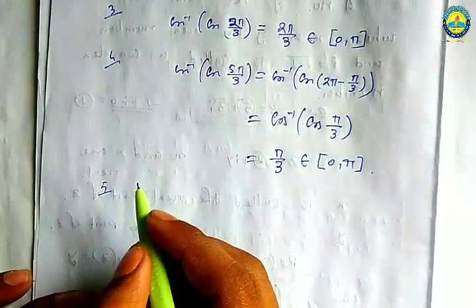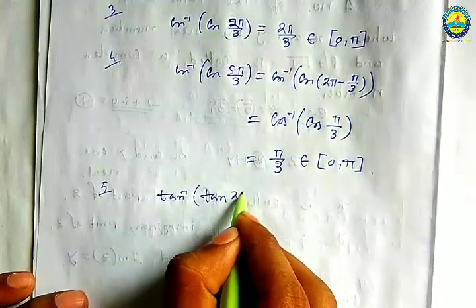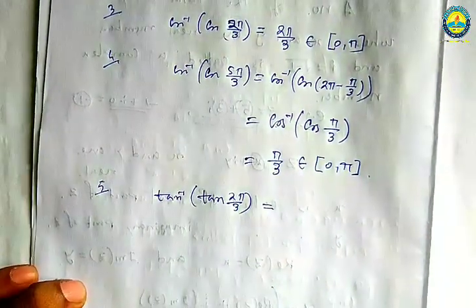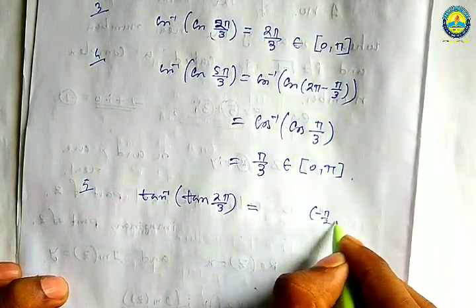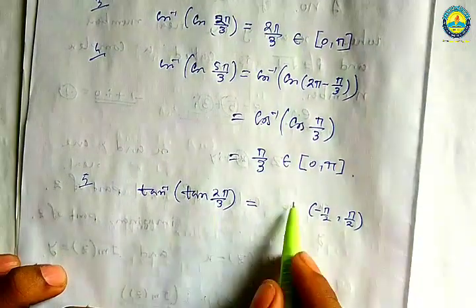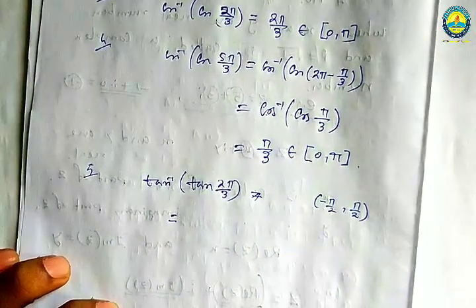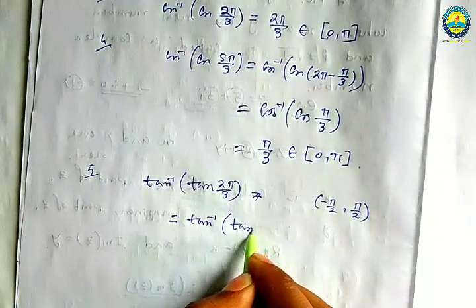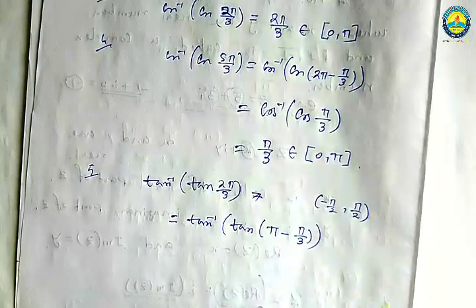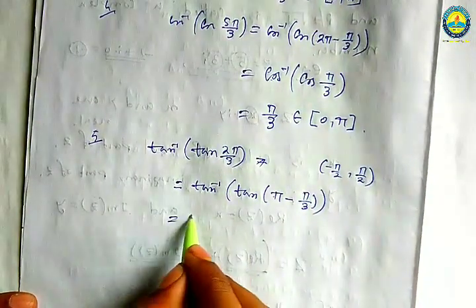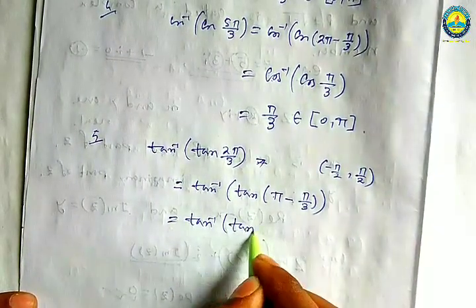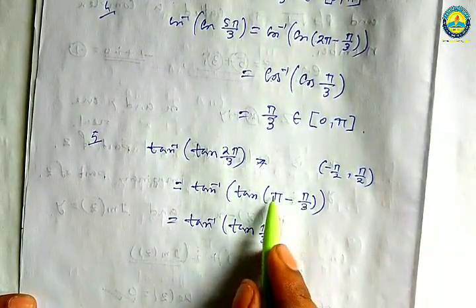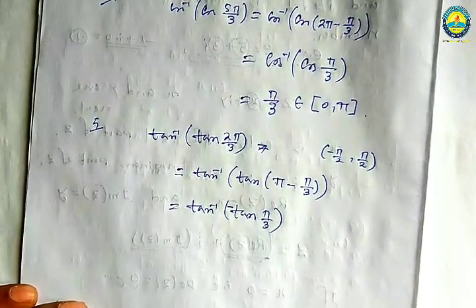Next, number 5: tan inverse tan(2 pi by 3). Initially tan inverse tan would cancel and give 2 pi by 3, but 2 pi by 3 is not in the range minus pi/2 to plus pi/2. So the answer is not 2 pi by 3. Since 2 pi by 3 is in the second quadrant, tangent is negative.